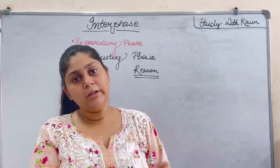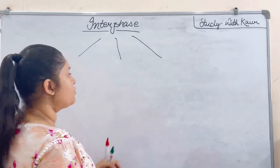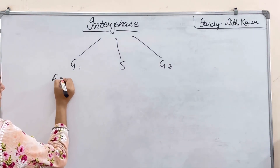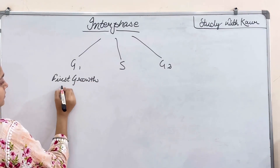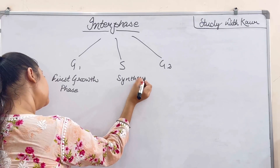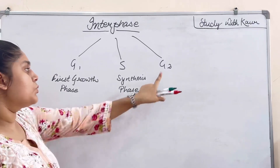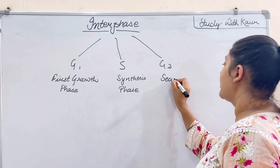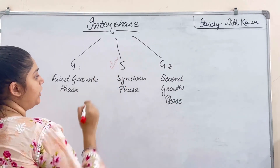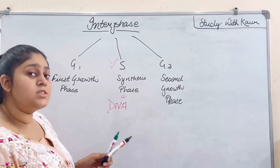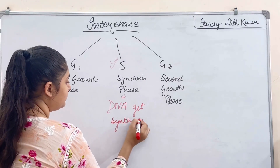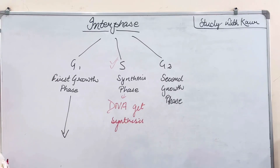Interphase is divided into three subdivisions: G1, S, and G2. G1 is also known as the first growth phase. S phase is known as the synthesis phase. G2 is known as the second growth phase. S phase is where DNA — deoxyribonucleic acid — gets synthesized.